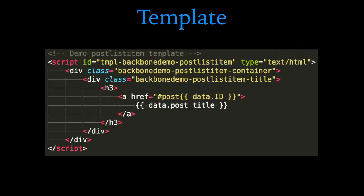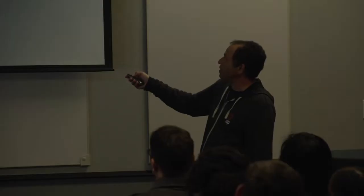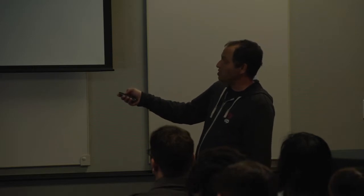Here's the template for the list. This template is going to be repeated over and over for each item — basically a single item with two data points: an a href linking to #post/{ID} and then the post title. So it's a hyperlinked title going to #post and then the ID of the post. For bootstrapping, I'm getting the first 10 posts and passing that data through with WP localize script — passing the JSON URL and also the post data as posts, just all the data from get_posts. WP localize script converts that into a JavaScript object available when the JavaScript loads.